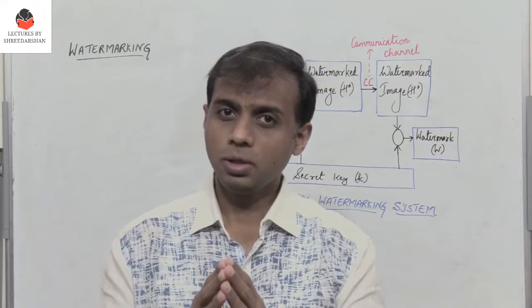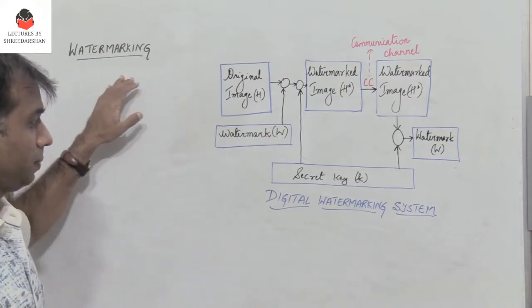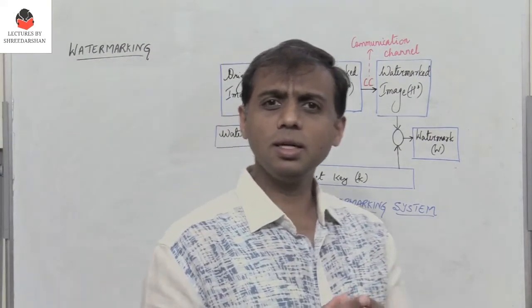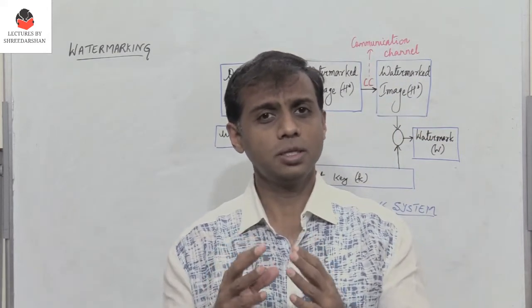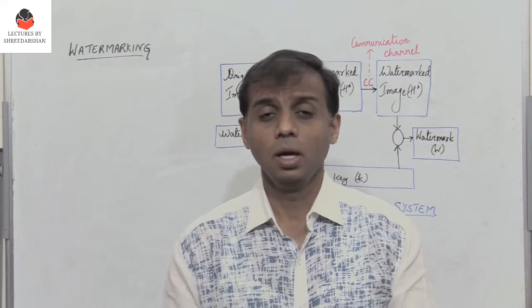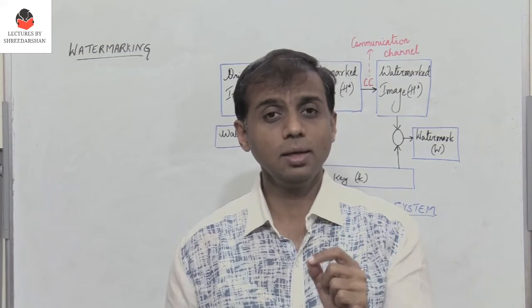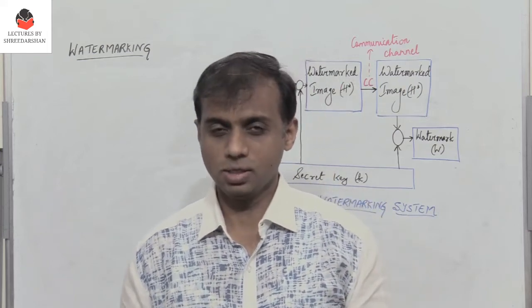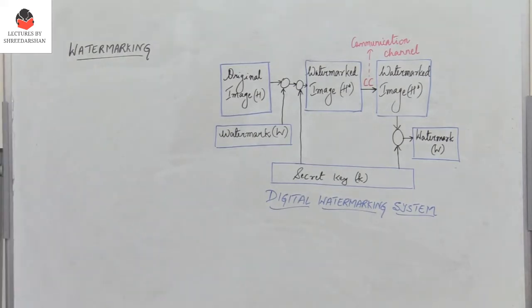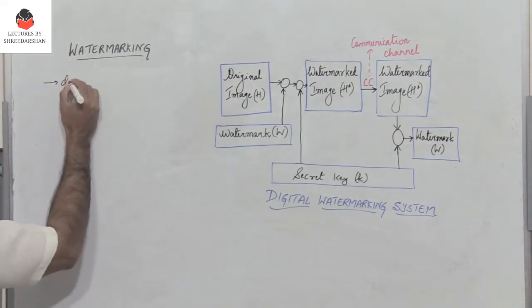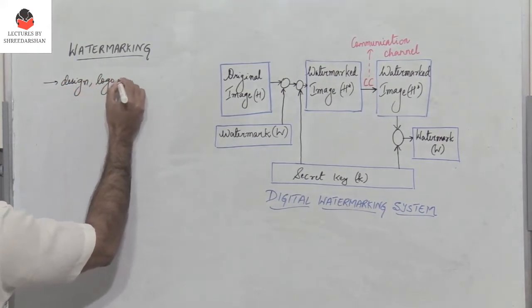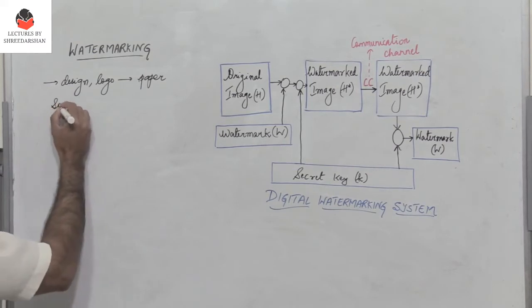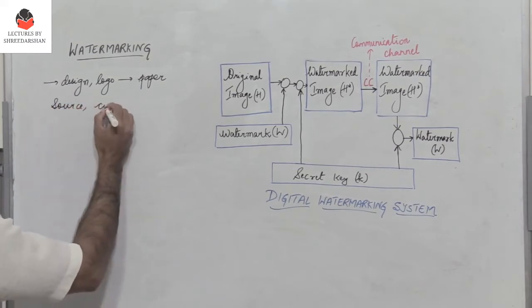In this video we will try and understand the basic meaning of watermarking and the general block diagram of a digital watermarking system. Watermarking is basically a logo or a design which is impressed on a piece of paper, done in order to identify the content creator or to identify the source of information, and is basically used for copyright protection.